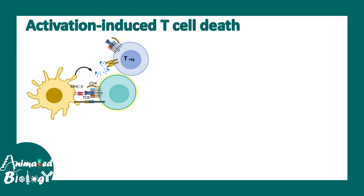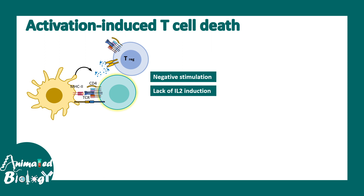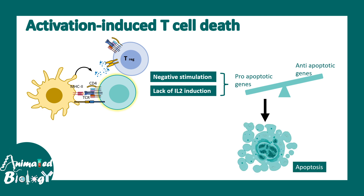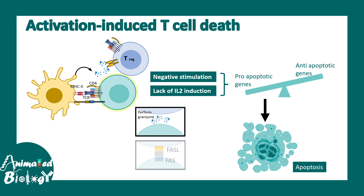When auto-reactive T cells do not receive enough co-stimulatory signals or sufficient IL-2-mediated induction, they eventually upregulate pro-apoptotic genes and downregulate anti-apoptotic genes. The balance between pro- and anti-apoptotic factors is altered, ultimately leading to destruction via apoptosis. It is also possible that perforin-granzyme mediated pathways and Fas ligand/Fas-mediated pathways can trigger the apoptosis response, though these remain active areas of discussion.